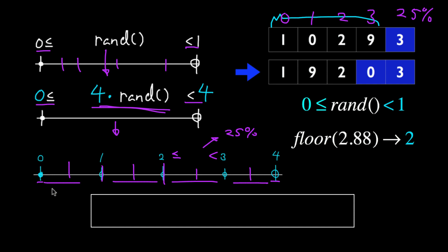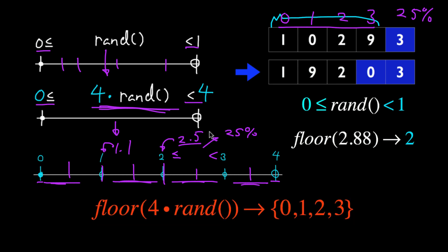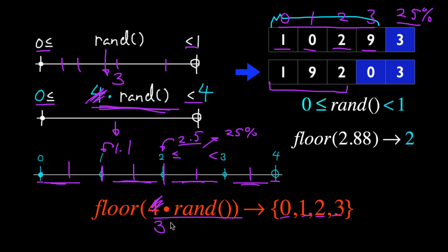We can assign each of these sections to each of the indices. So if we get, for example, 2.5 as the value of 4 times rand, we can assign that to index 2, and if we get 1.1, we assign that to 1. We can do that with floor of 4 times rand, which gives 0, 1, 2, or 3 with equal 25% probability. If we want to instead choose a random value out of 3 values, we replace the 4 with 3 and write floor of 3 times rand, and we'll be able to choose from 0, 1, or 2 instead.